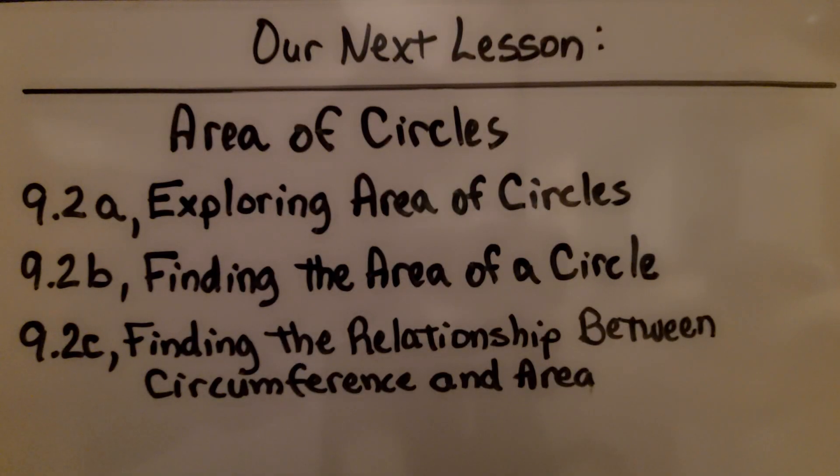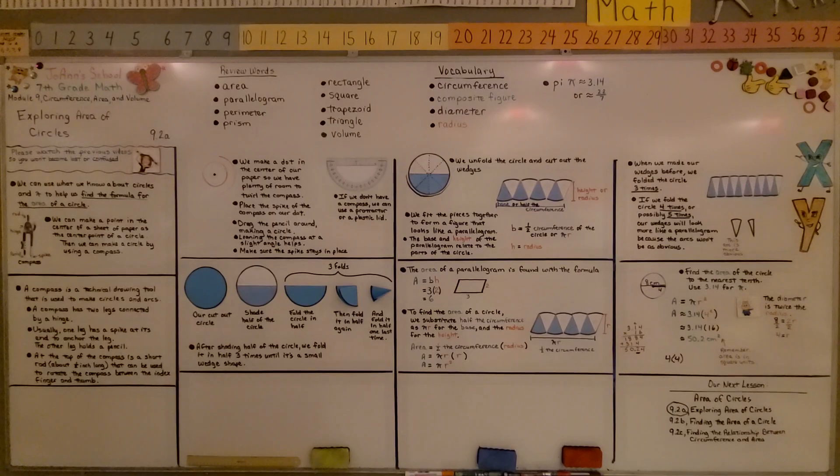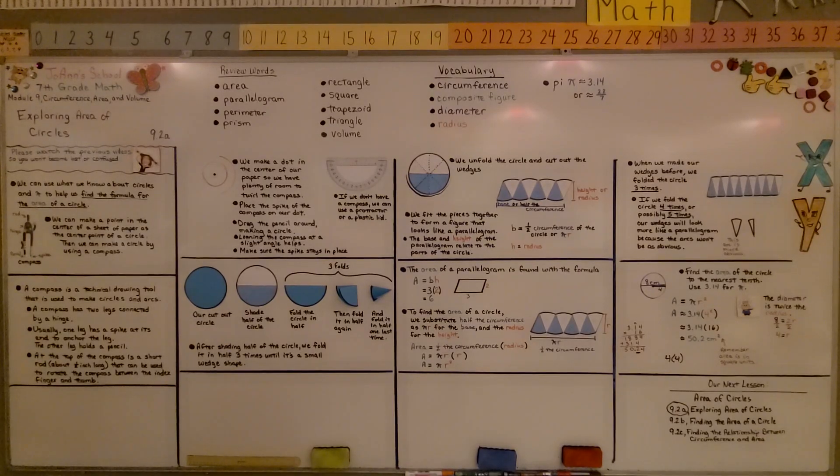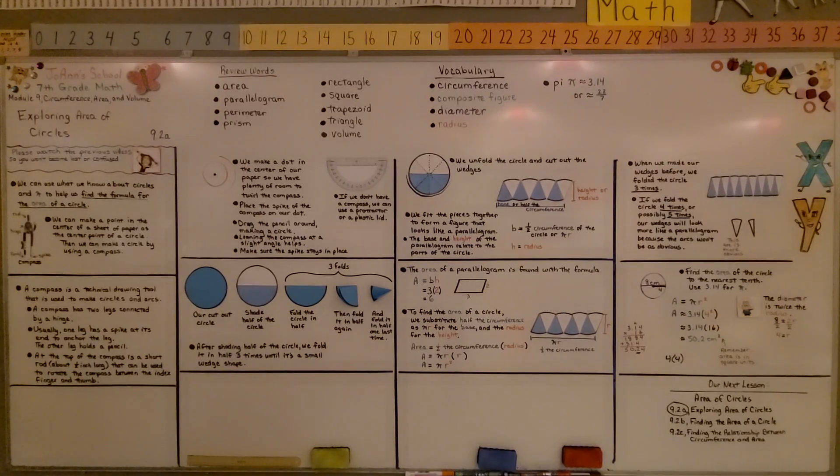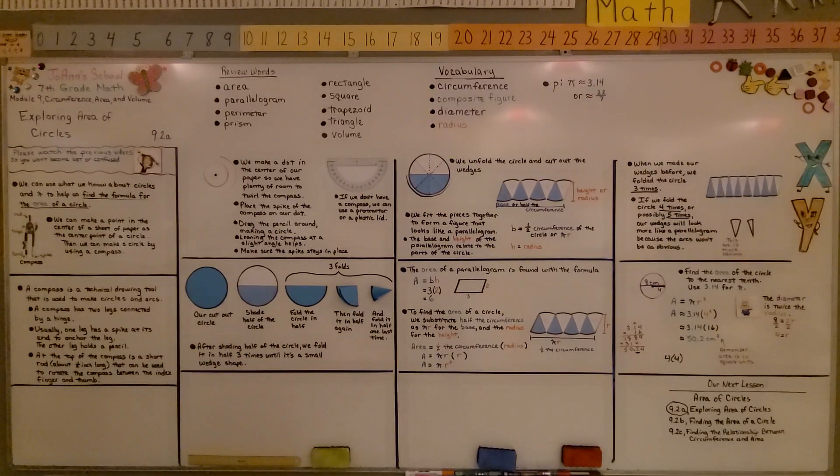So now we did our artwork and we had some fun and we finished 9.2a. We're going to move on to 9.2b, finding the area of a circle. We're going to use what we learned in this lesson. As you draw circles and arcs with a compass, you'll get better at it because you'll have more practice. Have a wonderful day, as always, and I hope you join me for the next part of the lesson. Bye!